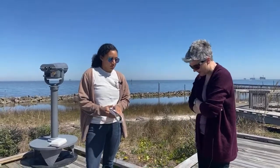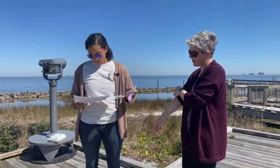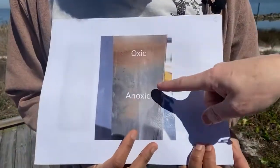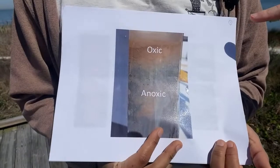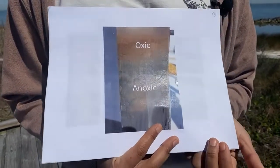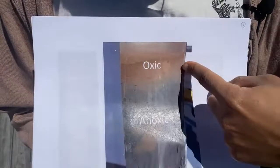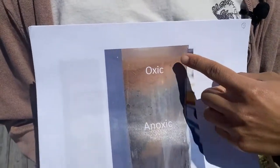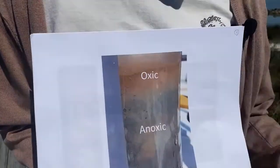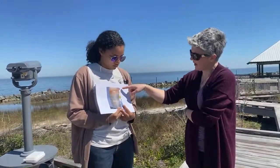Just to remind everyone: the oxic layer is oxygenated and the anoxic layer is not. That distinct coloration is reflective of the molecule iron — iron exists in different states. In the top layer iron is oxygenated, so what you're seeing is essentially rust. As you go deeper, iron is not oxygenated so that rust color goes away and you just get black.